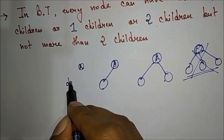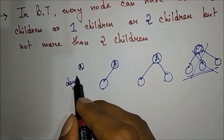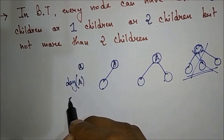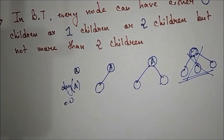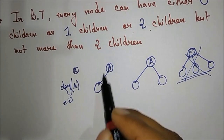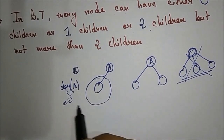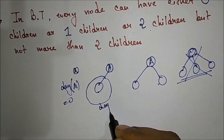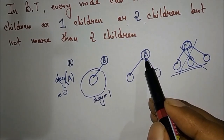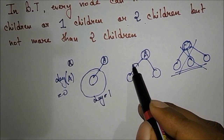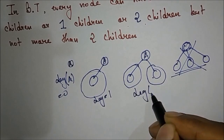Now for this node A, what is the degree? Degree is the number of subtrees. Degree of A is zero. For this next node, there is one subtree so degree will be one. For this node there are two subtrees so degree will be two.